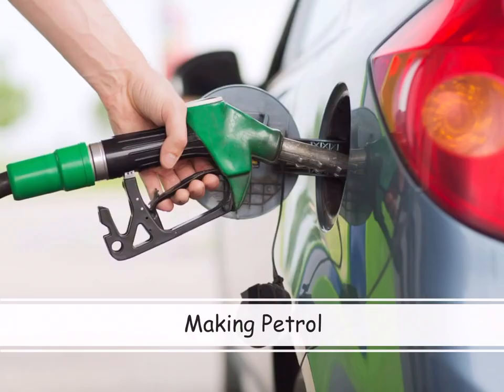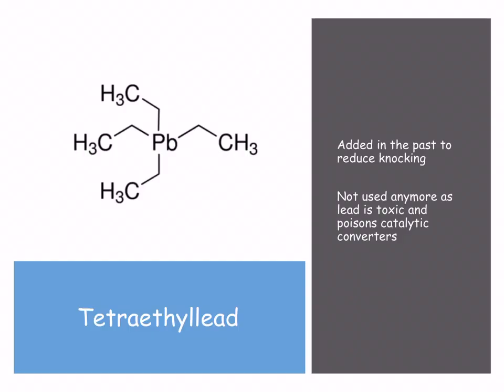Making petrol. So in approximately the 1920s it was discovered that we could add a lead compound called tetraethyl lead and that used to reduce the amount of knocking in engines. It was called an anti-knock additive. It is not used anymore.